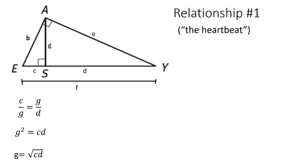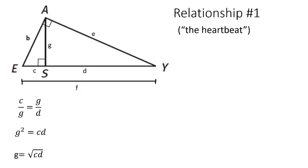I'm going to tell you why I call this the heartbeat. If you've ever watched shows about the emergency room or doctors, you see little heart rate monitors — they go boop, boop, boop, boop. If you look at our proportion: C over G equals G over D, it looks like that heart rate monitor. C over G equals G over D. That's why I call that first relationship the heartbeat.